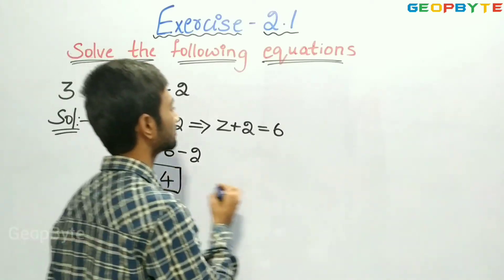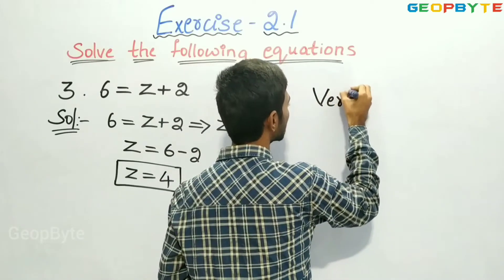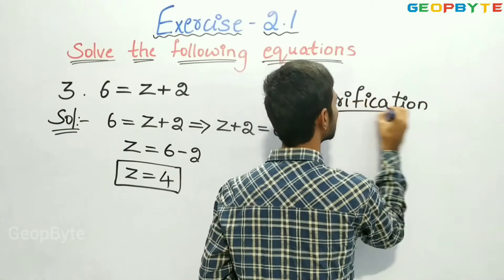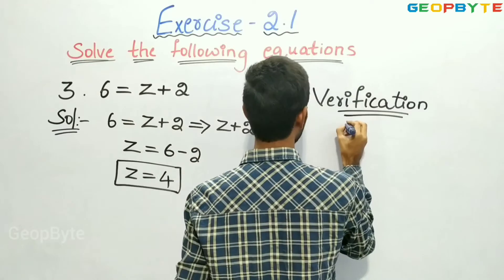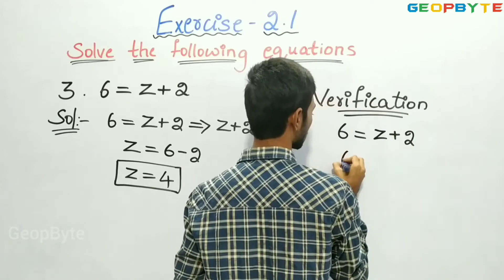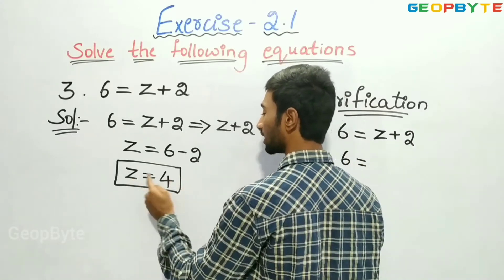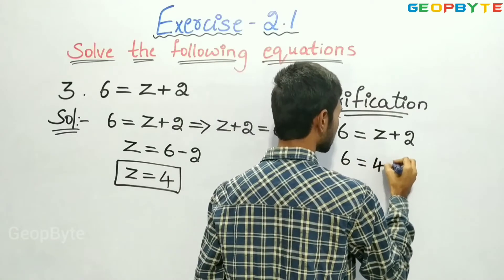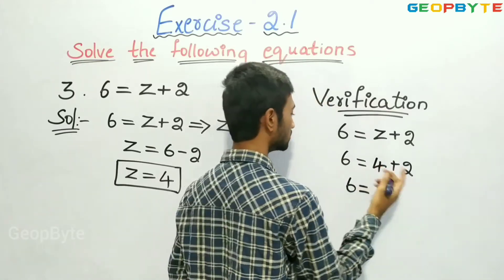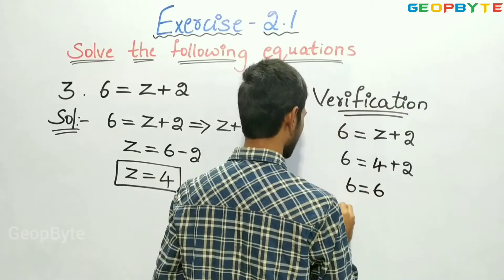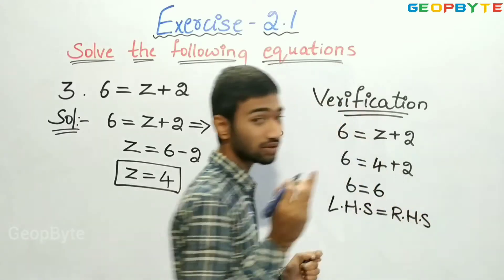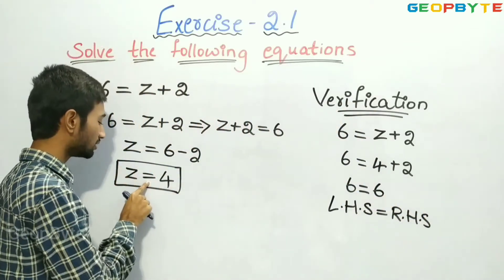Now let us verify. Verification: the given equation is 6 equal to z plus 2. The value of z is 4, so 6 is equal to 4 plus 2. 4 plus 2 is 6, so LHS is equal to RHS. So, we got the answer correct. That is, z is equal to 4.